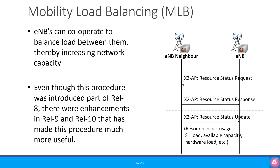The MLB procedure in 3GPP Release 8 can be explained as follows. An eNodeB can ask one of the neighbors to report three items of information using the resource status request message. First is the percentage of resource blocks that the neighbor is using in each of its updates, for both GBR and non-GBR traffic. Second is the load on the S1 interface. Third is the hardware load. The resource status response is returned immediately but does not contain any information. Periodically, the neighbor eNodeB will send a resource status update message over the X2AP interface, for both uplink and downlink.